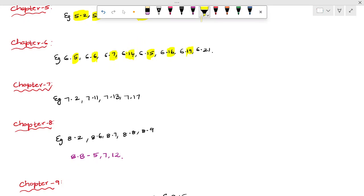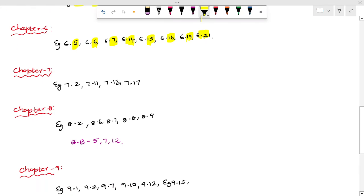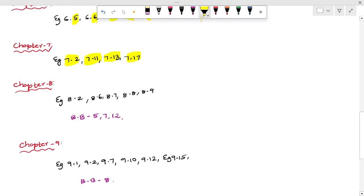Then 6.14, 6.15, 6.16, 6.19, 6.21. Then Chapter 7 is 7.2, 7.11, 7.13, 7.17. This is the example.